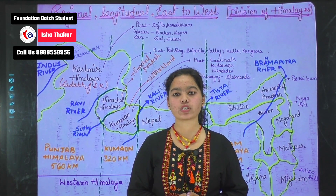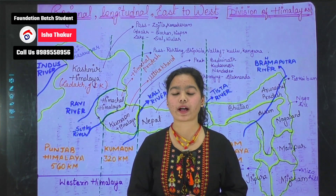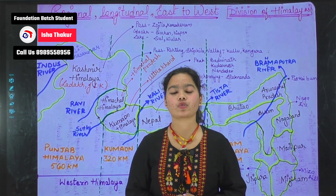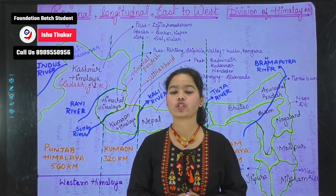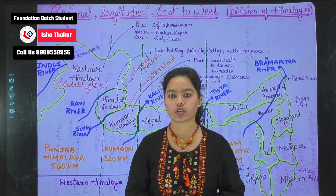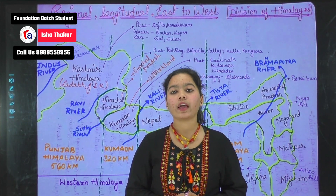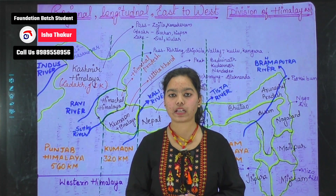Geomorphic division is subdivided into four parts: Trans, Great, Lesser, and Shivalik. Shivalik is also known as outer Himalayas.